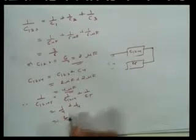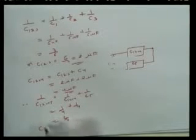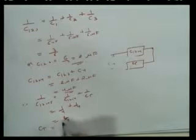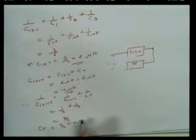So you will get 2 by 4. So the entire CT, the total equivalent capacitance, you will get as 4 by 2. That will be 2 microfarad.